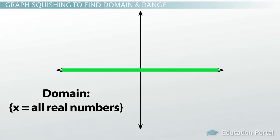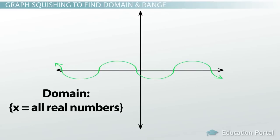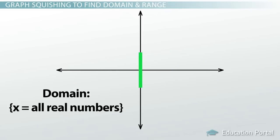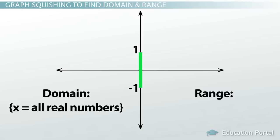To find the range, we'll do a pretty similar thing, except this time we're concerned with the output values — the y-axis. That means we squish the graph this way and look to see where the graph ended up. Now, though, the entire axis is not covered — it's only covered in the middle, between negative 1 and positive 1. That means the range is not all real numbers, and is only the values of y between negative 1 and positive 1.